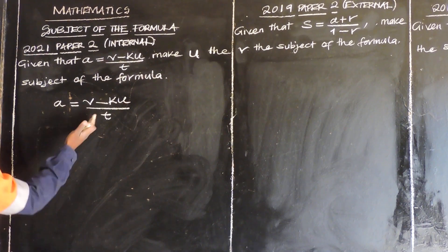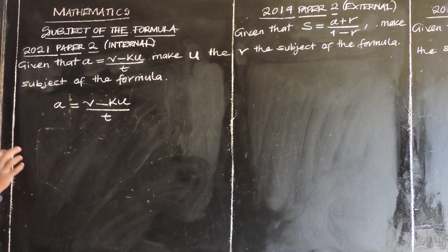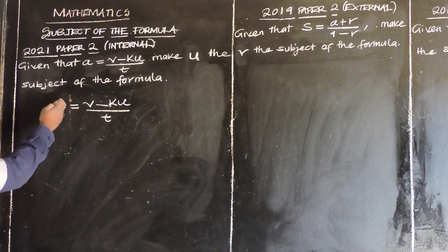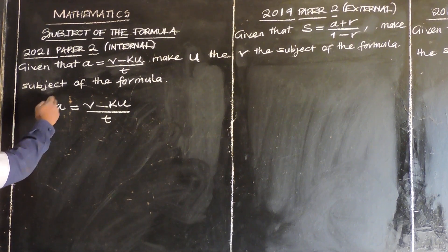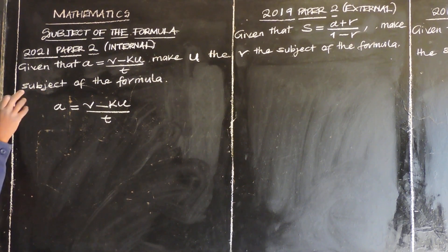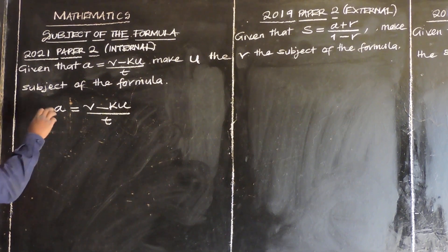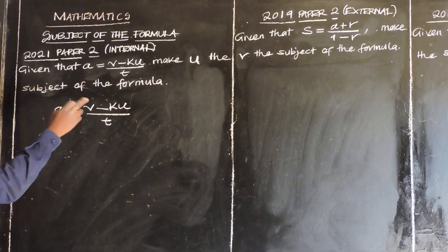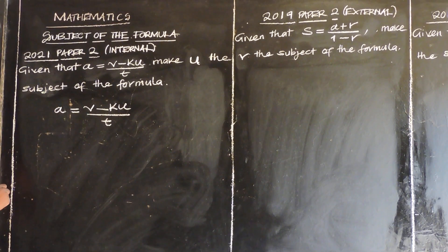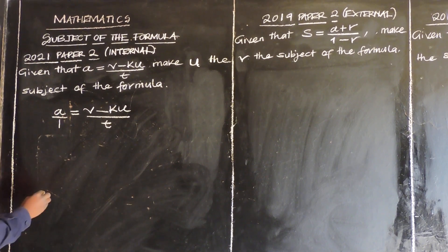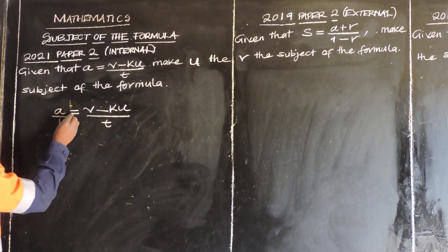So in our case, the subject of the formula is this letter on our left hand side. So they want us to make U the subject of the formula — they want us to change from A to U. Step number one, we say over 1, divide by 1, then cross multiply.